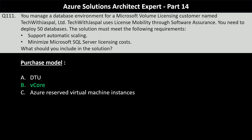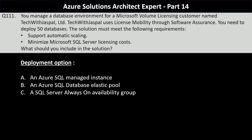The vCore model provides a more direct way to choose compute and storage resources and can offer cost savings. The vCore-based purchasing model also allows you to use Azure Hybrid Benefit to save on licensing costs. For the deployment option, the choices are Azure SQL Managed Instance, Azure SQL Database elastic pool, and a SQL Server Always On availability group. Azure SQL Database elastic pool should be chosen, as it is a simple, cost-effective solution for managing and scaling multiple databases with varying and unpredictable usage demands.